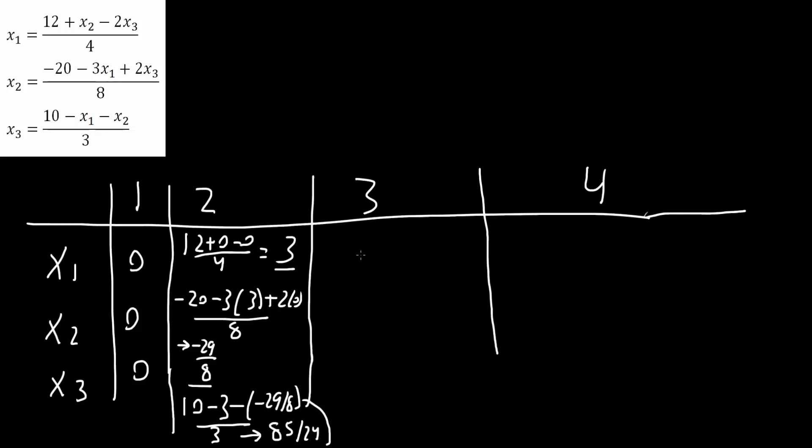And now we will do the second iteration. Same idea. So now for x1, we plug in these set of numbers. So we would get 12 plus x2, which is negative 29 over 8, minus 2 times x3, which is 85 over 24. This whole thing will be divided by 4. And so we would get 31 over 96.